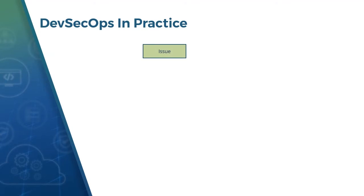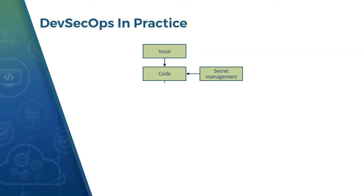Let's start with Issue, which is one of the use cases you want to implement. Developers will be writing code, and while writing code they need to focus on secret management. Then after coding is done, it goes for build, where you need to conduct code quality SAST, which stands for Static Application Security Testing.